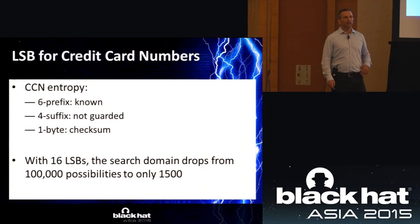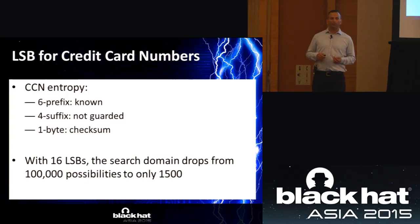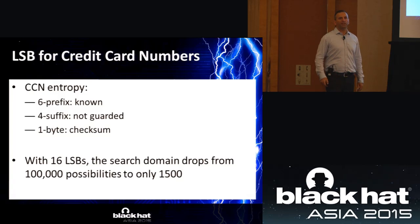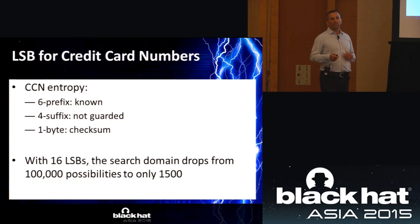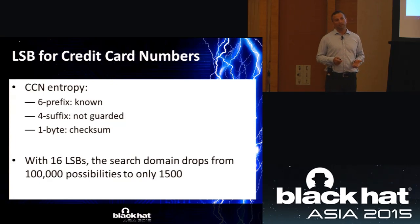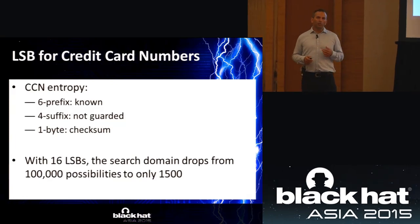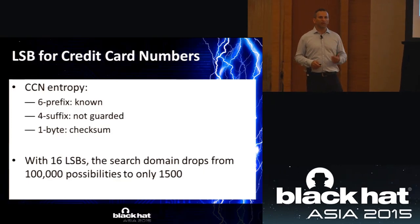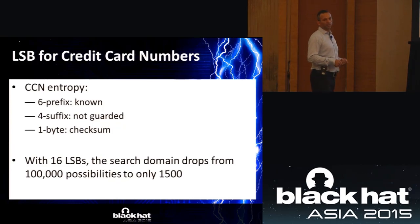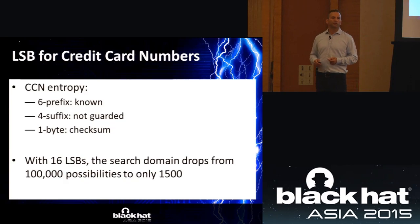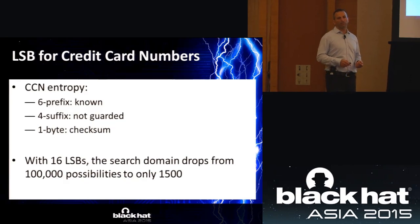Another acceleration: consider credit card numbers. You have 16 digits, but the first six are known bank/company identifiers, the last four digits are not very secure as they appear in many documents, and there's a one-byte checksum. When you have the least significant bits of all 16 digits, instead of needing 100,000 attempts, the number is reduced to 1,500 — a significant acceleration of the trial-and-error attack.